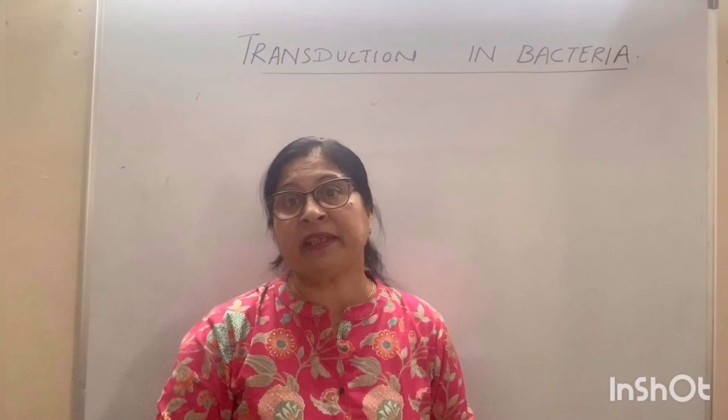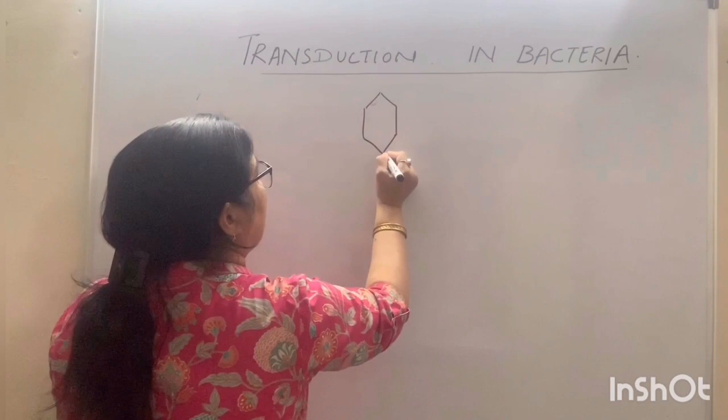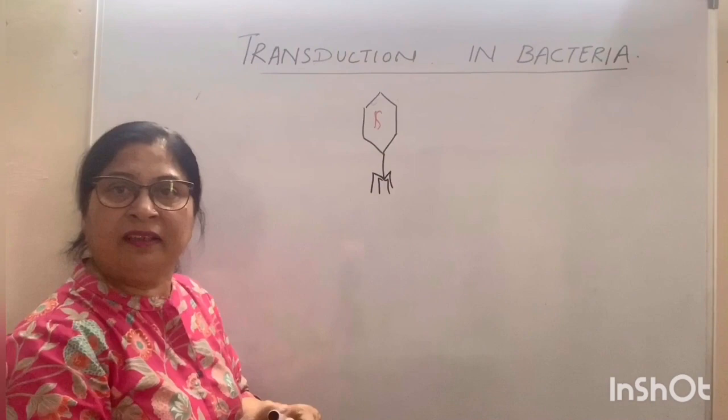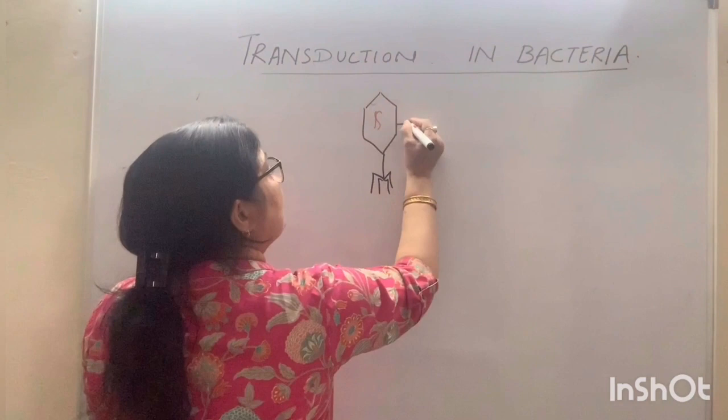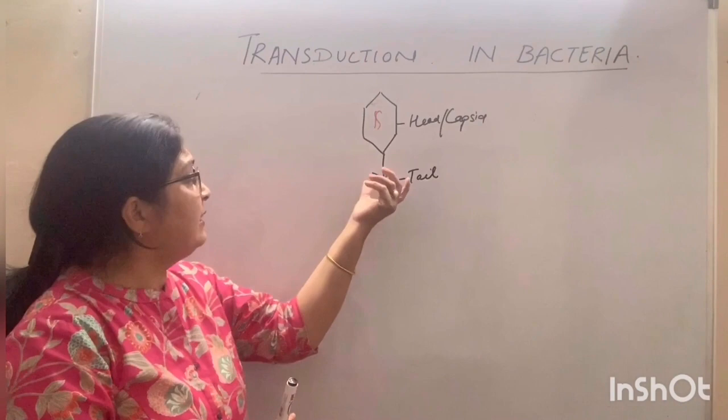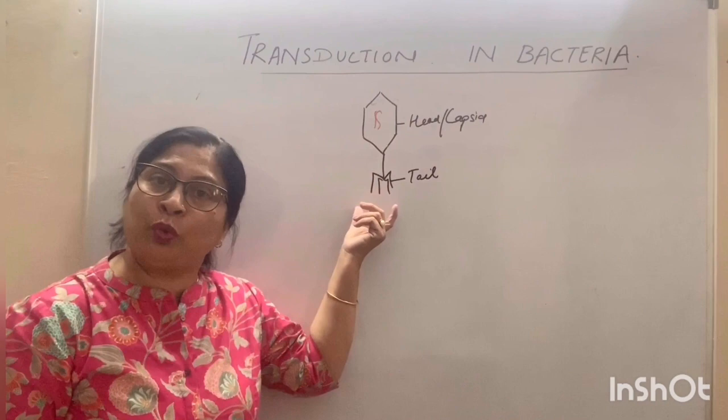If you see the structure of bacteriophage, it looks like this. The genetic material is present inside the head or capsid. This part is known as the head or capsid. And this is known as the tail. The genetic material is present in the capsid, and the tail is a hollow structure attached to the capsid. Through this tail, the genetic material is passed on to the host cell.